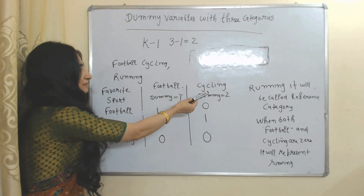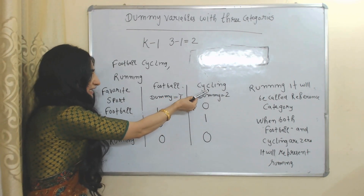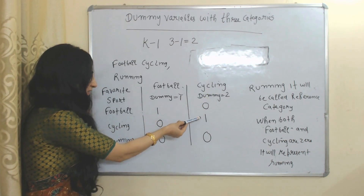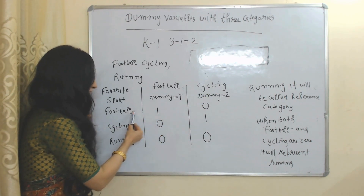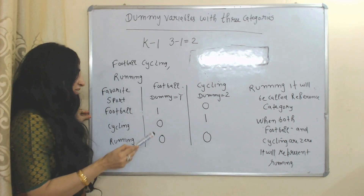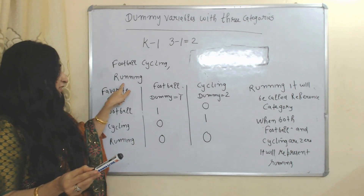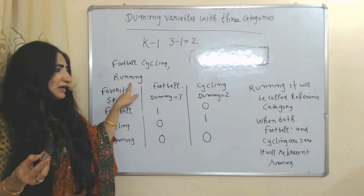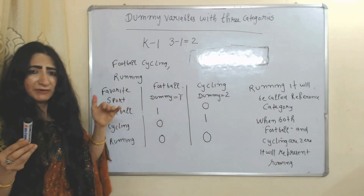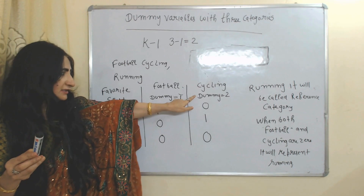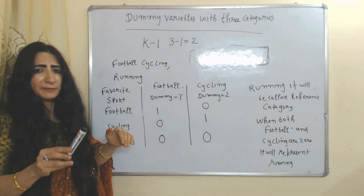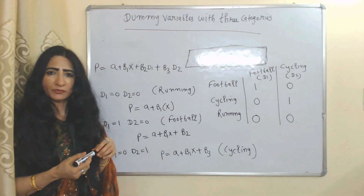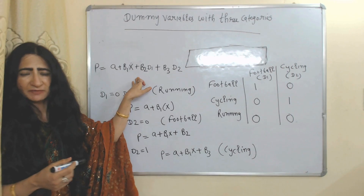The second dummy variable is cycling. When cycling is the dummy variable, cycling equals one and the other variables are equal to zero. We kept football and cycling as dummy variables but did not keep running as a dummy variable. That's why running will be called the reference category. When both football and cycling are equal to zero, this represents our reference category — meaning it represents running.